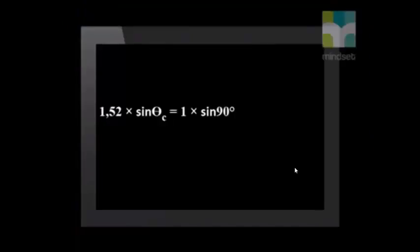Now we can substitute our variables into our equation. So 1.52 times sine of the critical angle equals 1 times sine of 90 degrees, which means that the critical angle as light travels from glass into air is 41.14 degrees.